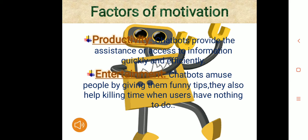Factors of Motivation: There are many factors of motivation. Productivity — chatbots provide assistance or access to information quickly and efficiently. Entertainment — chatbots amuse people by giving them funny tips.